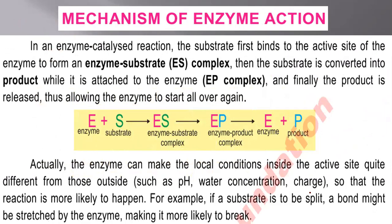The mechanism of enzyme action describes how an enzyme performs its function. The enzyme binds with a substrate to form an enzyme-substrate complex, and then the substrate is converted into the required product. The enzyme-substrate complex changes into an enzyme-product complex. Since enzymes do not utilize themselves in the reaction, they remain unchanged and can be utilized again in the same reaction.